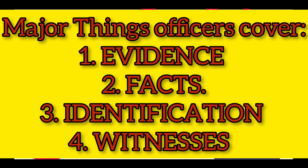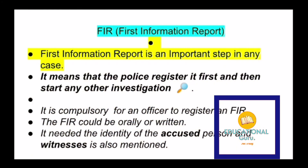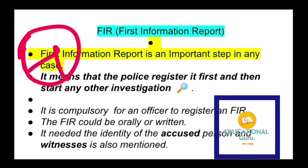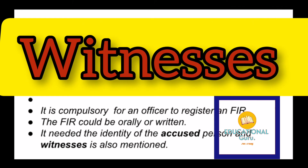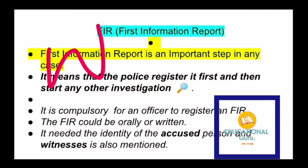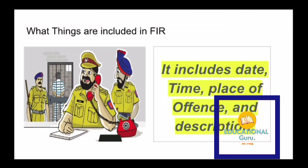The third important thing is the identity of the person — who committed the offense, their name, and related details. The fourth thing is the witness. Witnesses are people who saw the crime take place, and they are really important in any case to tell the officer that the crime was committed by a specific person.